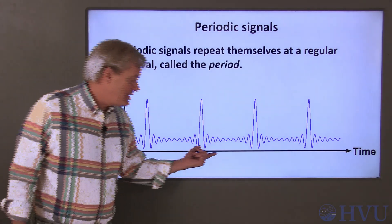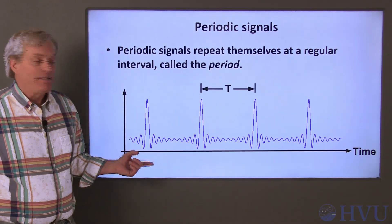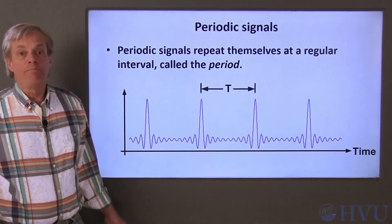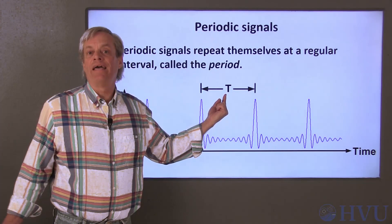For example, this is a periodic signal. It takes this amount of time for the signal to repeat itself. The period is generally denoted by a capital T.